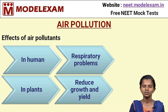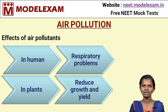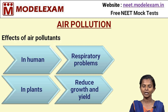Air Pollution. Here we are going to see the effects of air pollutants. In humans, it causes respiratory problems. When you inhale polluted air containing a large number of microbes and other particles, it causes respiratory problems in human beings. It also causes effects in plants. The effects of air pollutants on plants are that it reduces growth and yield. Because plants also respire the air in the atmosphere, consuming polluted air causes a reduction in plant growth and yield.